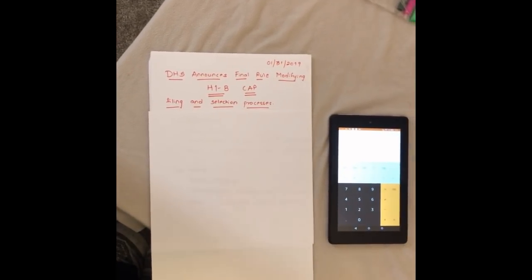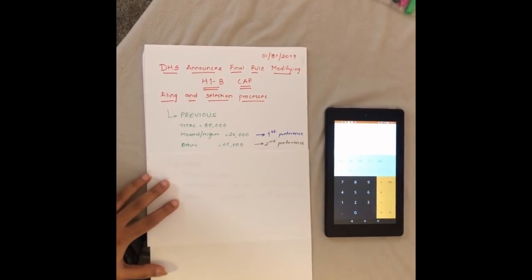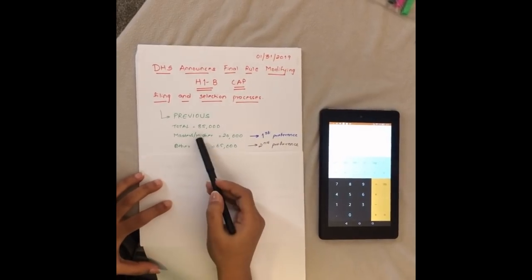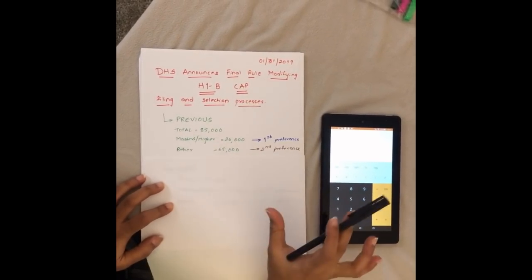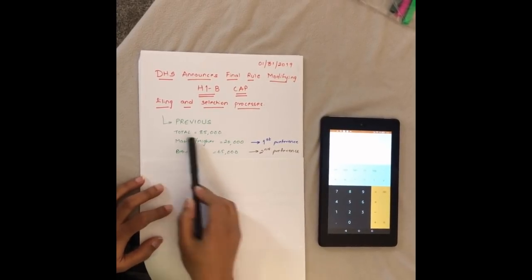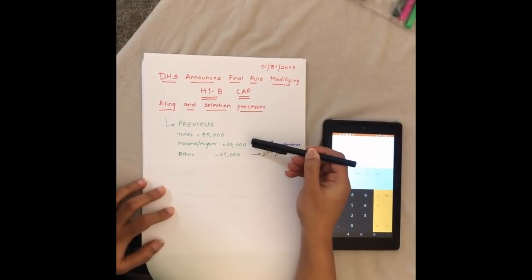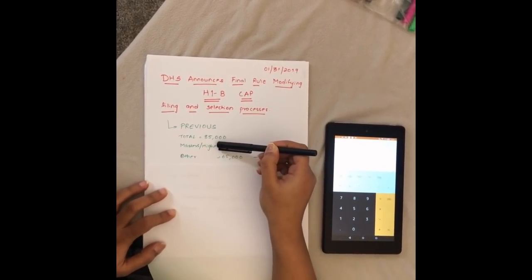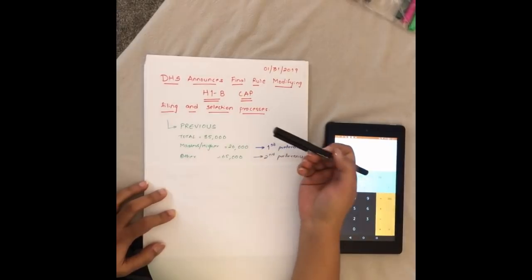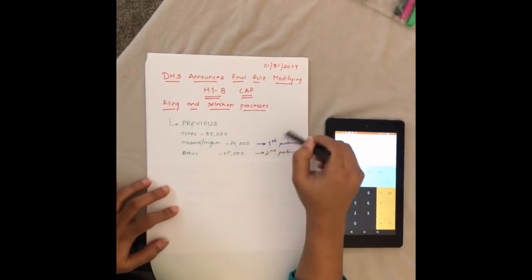Previously, how it used to work is very simple. We had a total of 85,000 seats for H1B cap, out of which 20,000 seats were allocated for masters or higher education students who have done their masters from the United States of America.